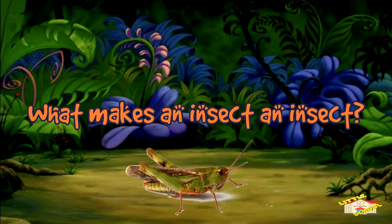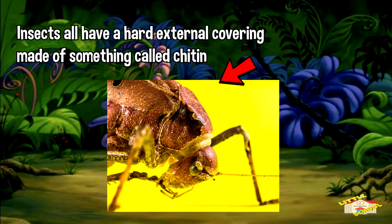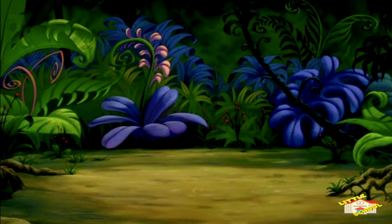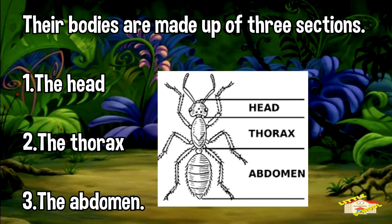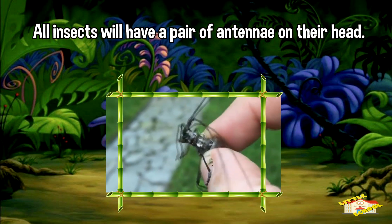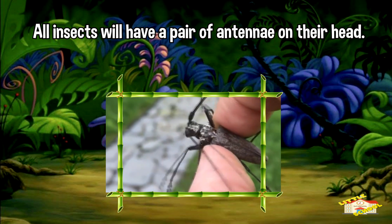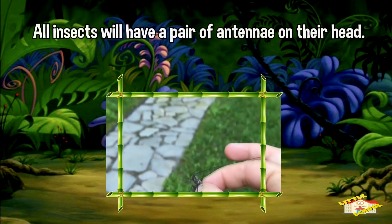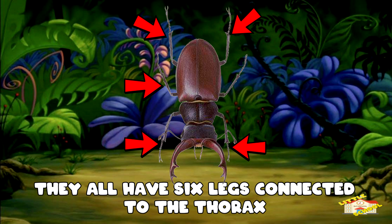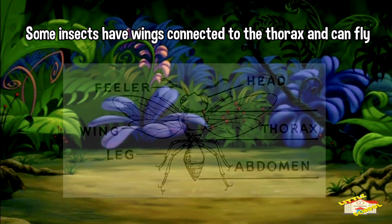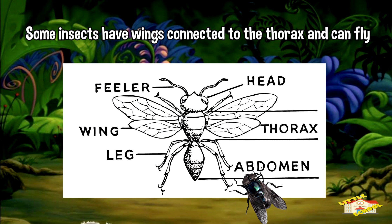What makes an insect an insect? Let's find out. Insects all have a hard external covering made of something called chitin. Their bodies are made up of three sections called the head, the thorax, and the abdomen. All insects will have a pair of antennae on their head, and they all have six legs connected to the thorax.